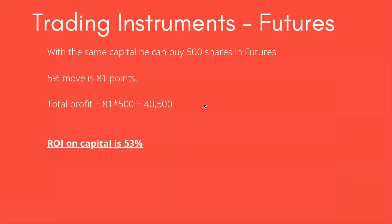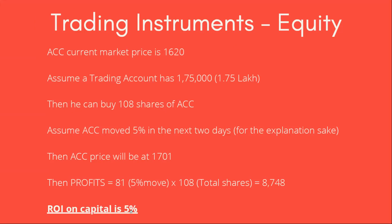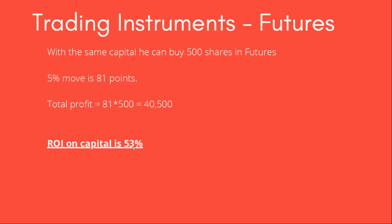With the same assumption of a 5% move on the upside, the overall point move is 81 points. The total profit is around 40,500, which is 81 points into 500 shares — one lot. The profit is 40,500 on our capital of 1,75,000, giving a return on investment of 53%. So it was just 5% in equity, but it shoots up to 53% in the case of futures.